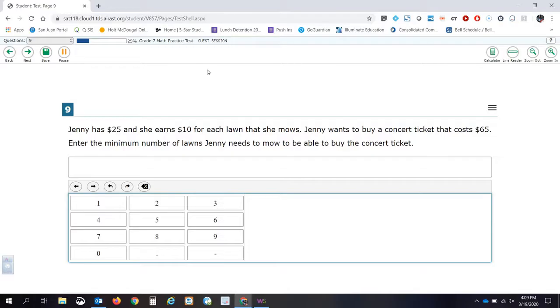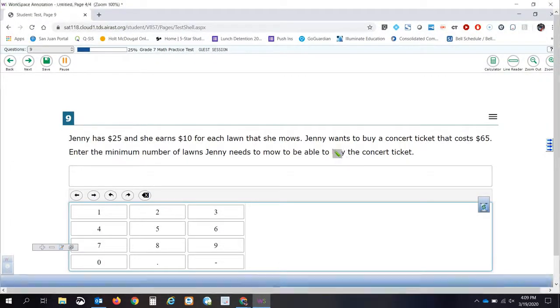Question number nine. Jenny has $25 and she earns $10 for each lawn that she mows. Jenny wants to buy a concert ticket that costs $65. Enter the minimum number of lawns she needs to mow to be able to buy a concert ticket. So she wants to buy a concert ticket. How much is that concert ticket? Well, it is $65.